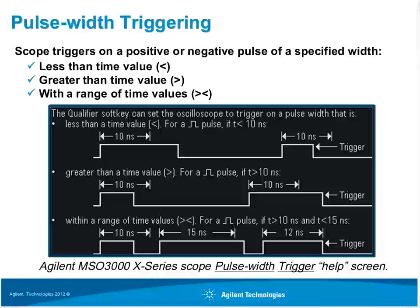This slide shows the help screen of the Agilent 3000 X-Series Oscilloscope for pulse-width triggering. At Agilent, we've added as much information as possible into the help screen because triggering can be a complicated issue. With pulse-width triggering, the scope monitors the input signal for positive or negative pulses that meet criteria you specify. You can specify to trigger on pulses narrower than a specific time value, wider than a specific value, or with a width within a user-specified time range.